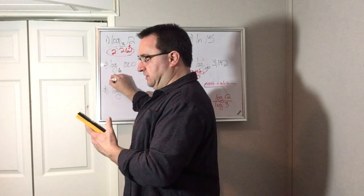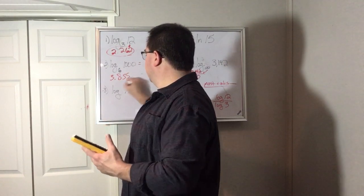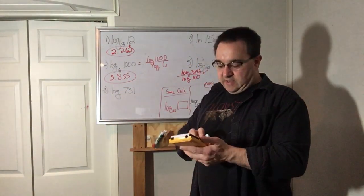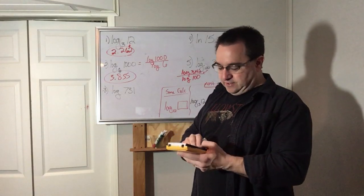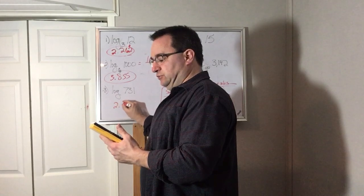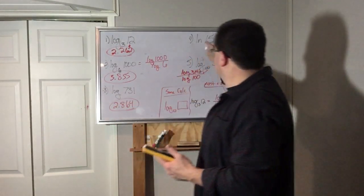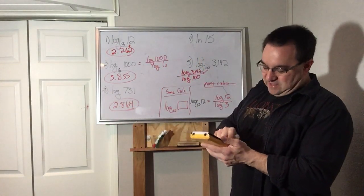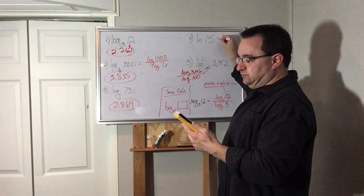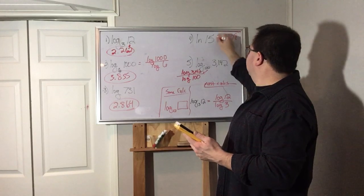Log of 731, there's no number there. I literally press log button 731, enter, done. 2.864. LN, I literally press LN 15, enter, and I get 2.708, done.